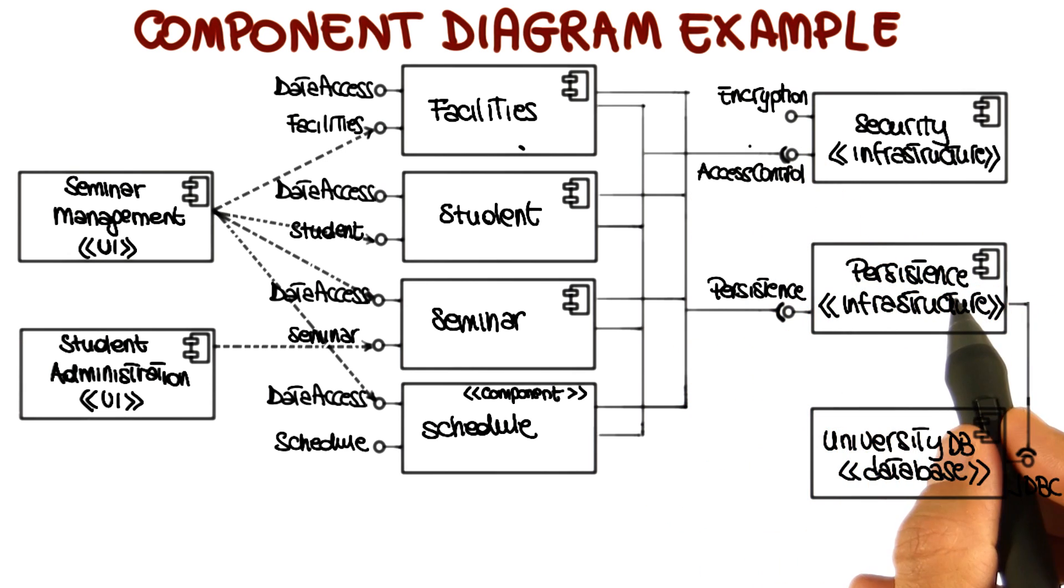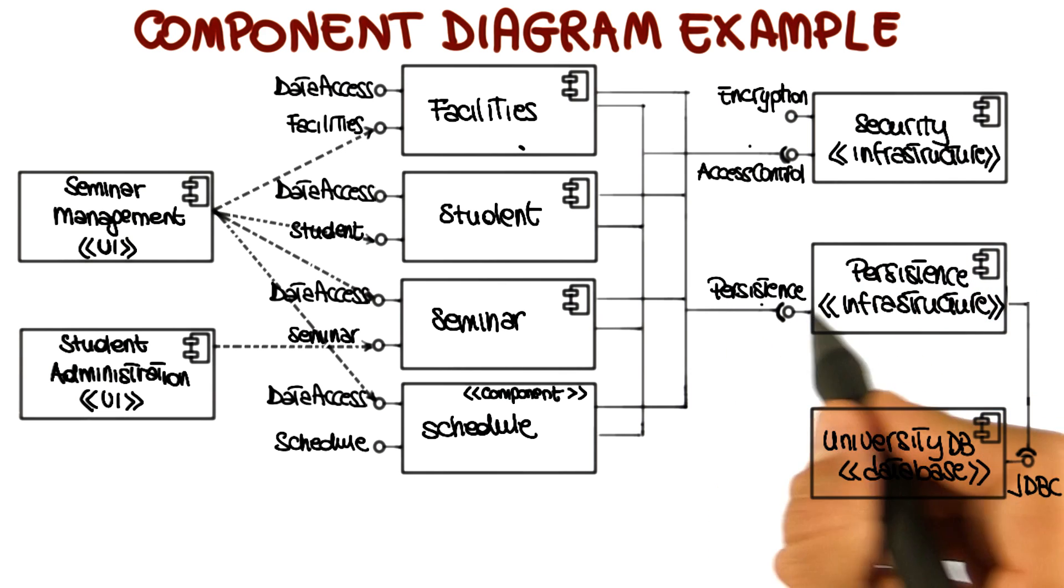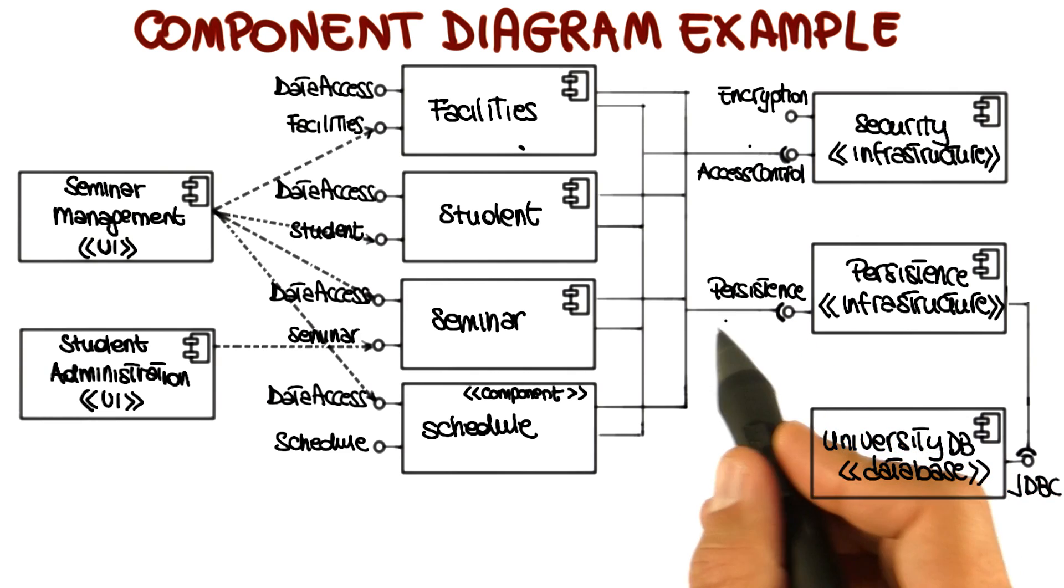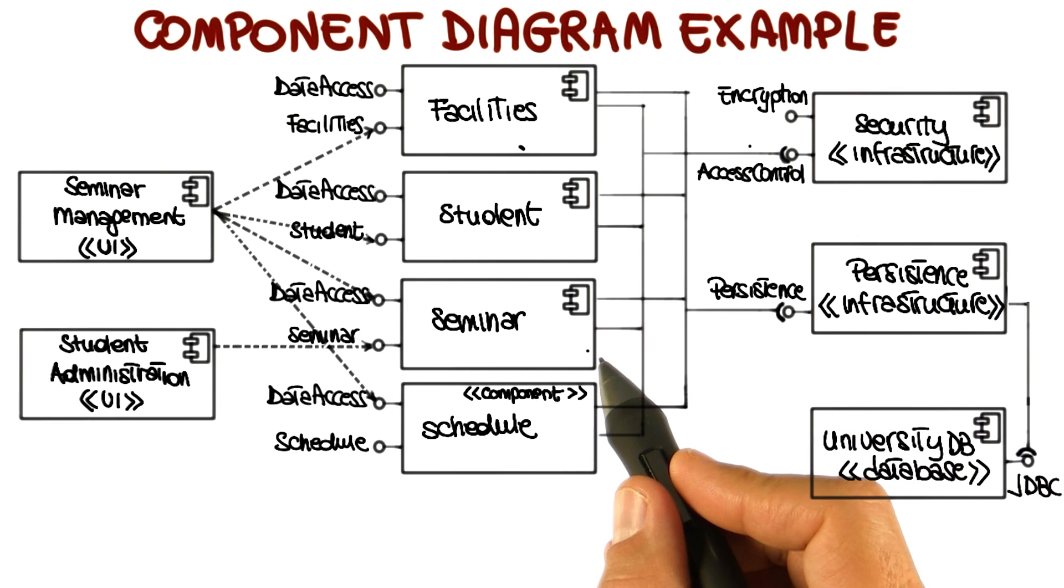To give you another example, if we look at the persistence component, the persistence component provides, unsurprisingly, persistence services. And those persistent services are required by several other components in the system.